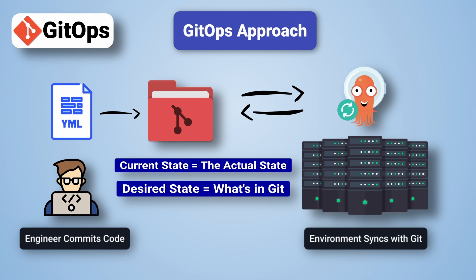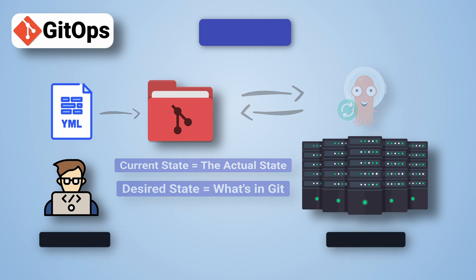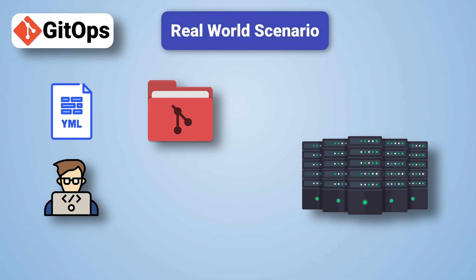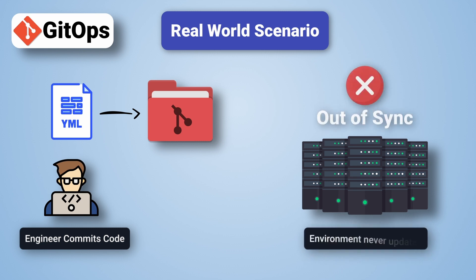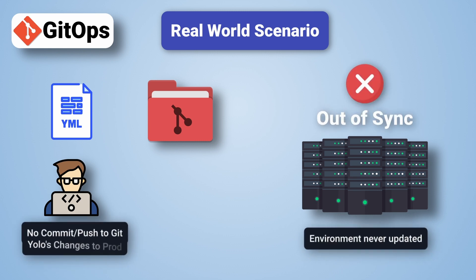To understand this better, let's consider the traditional approach again where the engineer is manually applying the changes. What if the engineer created the infrastructure files and committed them to Git, but before he ran the Apply, he went out for a coffee, started scrolling Reddit, or left for the day? Or even worse, what if he prepared the changes and ran the Apply but never committed and pushed the new changes? What's running in production is no longer in sync with what's in Git, and this leads to troubleshooting nightmares. This is a real-world scenario that has happened at even the best companies, and it's what GitOps aims to solve.